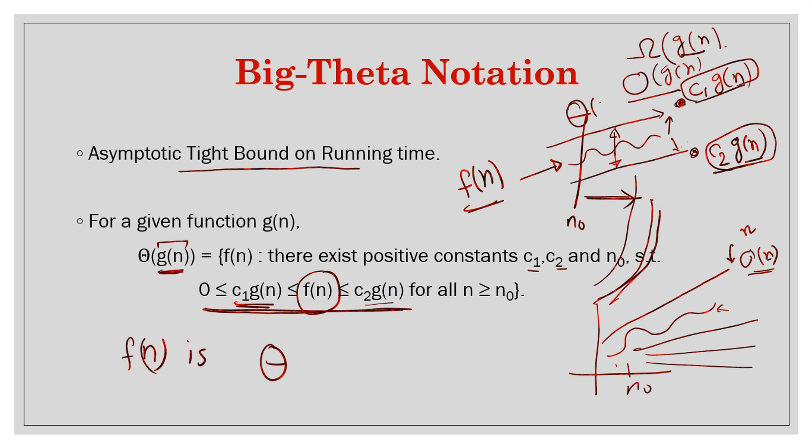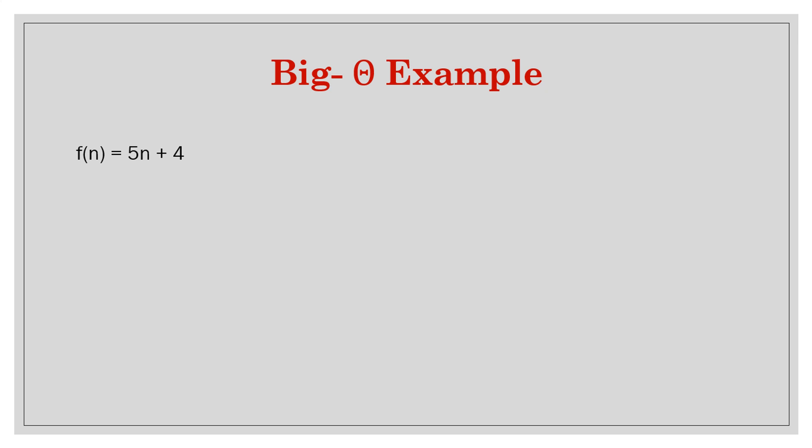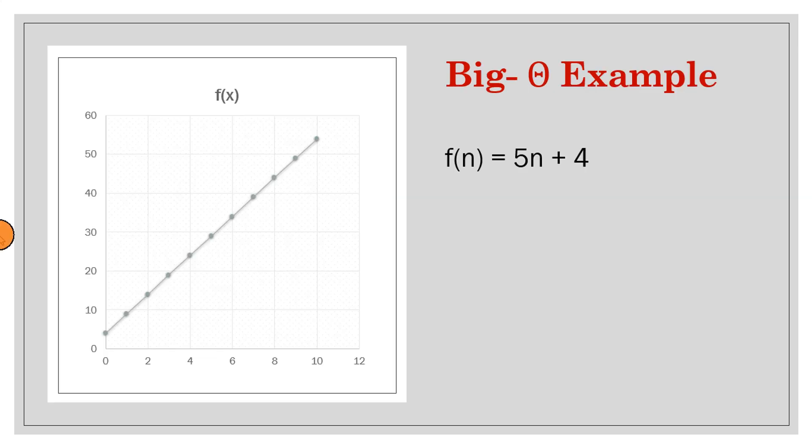Now let's take the same examples that we saw earlier. So let's say our function is a linear function, f(n) = 5n + 4. Its plot is like this one, and this is here at 4. So let's say the constants are...